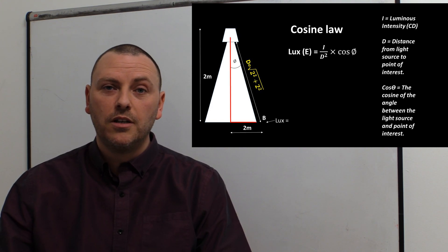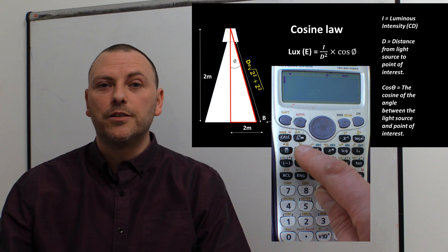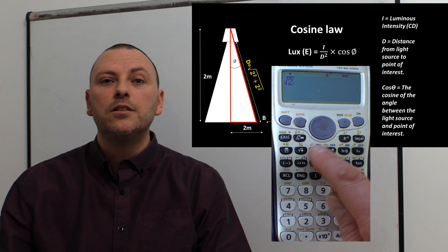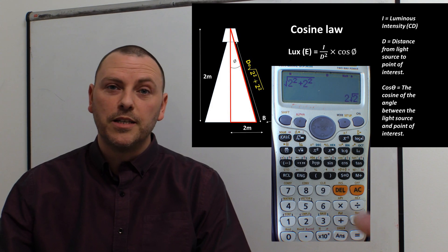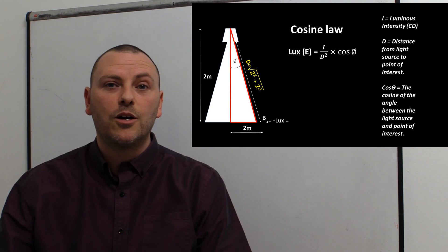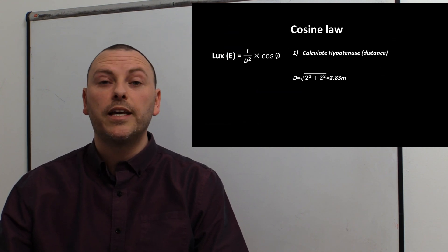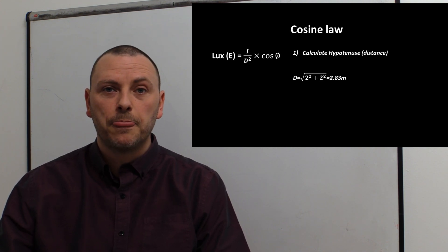This kind of setup creates a right angle triangle, and that's why we can use Pythagoras. In our setup, we're going to do the square root of 2 meters squared plus 2 meters squared, because that's our height and our horizontal distance. That goes into the equation and we get a d value of 2.83 meters.